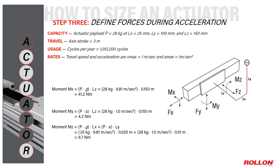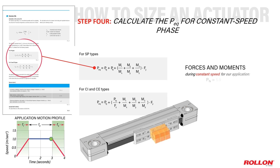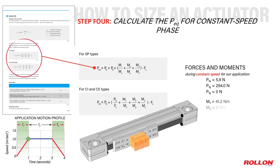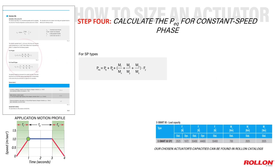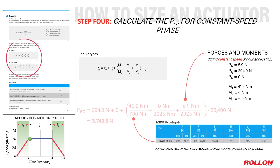Step four when sizing an actuator is to obtain an equivalent load or PEQ value published in datasheets, to account for all forces and moments during constant speed actuator operation. We'll ultimately use this value to calculate the actuator's expected service life. We enter our example application values into the PEQ equation for Rollon eSmart 80 units. Notice how actual application moments divided by maximum values published in the Rollon catalog yield safety factors for the moments acting on our example actuator.